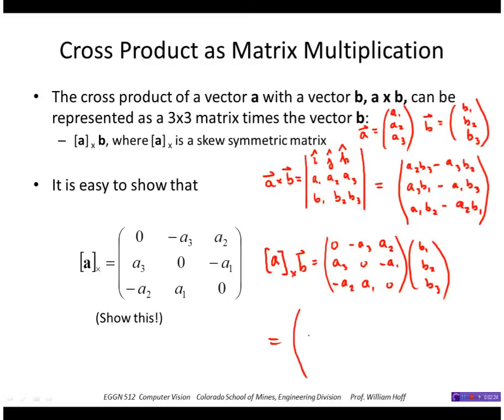So multiplying that out, I get minus A3 B2 plus A2 B3. A3 B1 minus A1 B3, and minus A2 B1 plus A1 B2. So that is true.